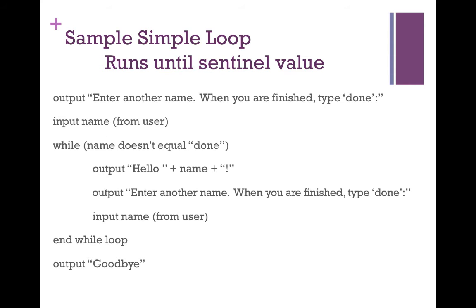Our final example is running until we reach a sentinel value. This program asks the user to input a name, and when they're finished entering names, they type the word done. We grab the name from the user and say while the name doesn't equal done, we output hello plus the name and an exclamation point. Then we prompt the user again to enter another name, remind them to type done when finished, grab that name again and store it back into our name variable. If name does equal done, we exit out of the loop and output goodbye.